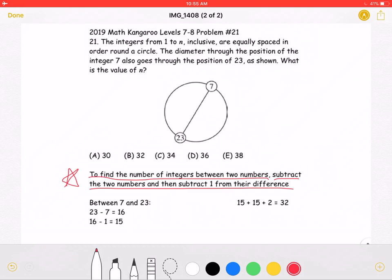In order to find the number of integers between 7 and 23, we must subtract the two numbers, getting 16, and then subtract 1 from that difference, getting 15.